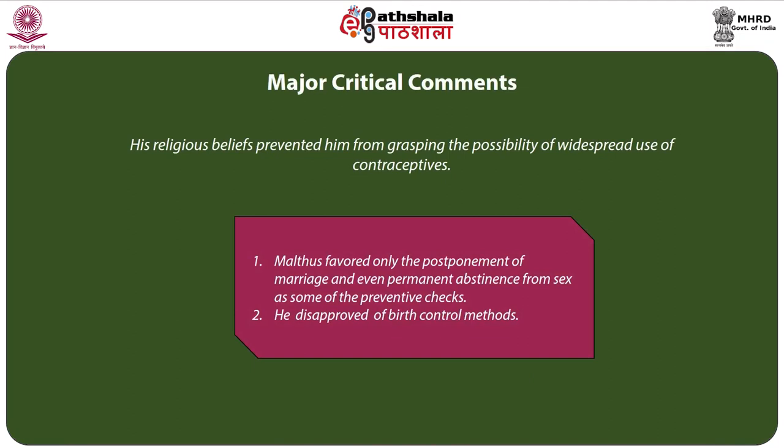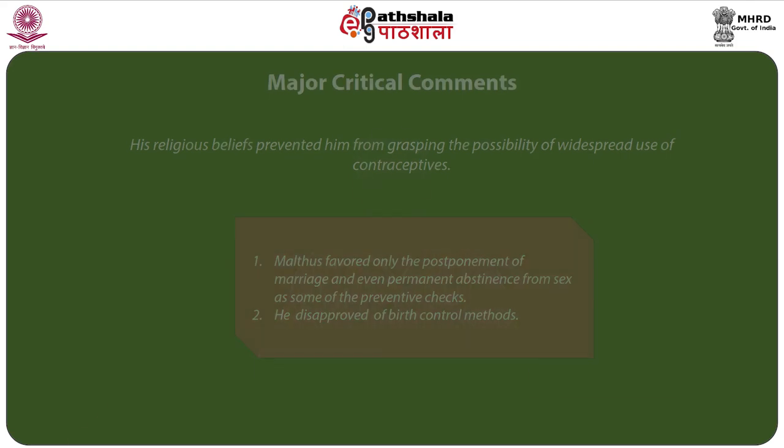Malthus's religious beliefs prevented him from grasping the possibility of widespread use of contraceptives. He favored only the postponement of marriage and even permanent abstinence from sex as preventive checks, never expecting that contraceptives would have a tremendous effect on population control. Credit goes to contraceptive technology, which subsequently brought important changes in family size through family planning measures, significantly reducing population growth, as seen in most countries of the world.